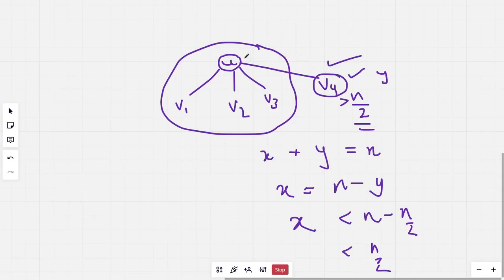Since the subtree size for this is greater than n by 2, we know for definitely that u can't be the centroid, and so none of these children can also be the centroid.